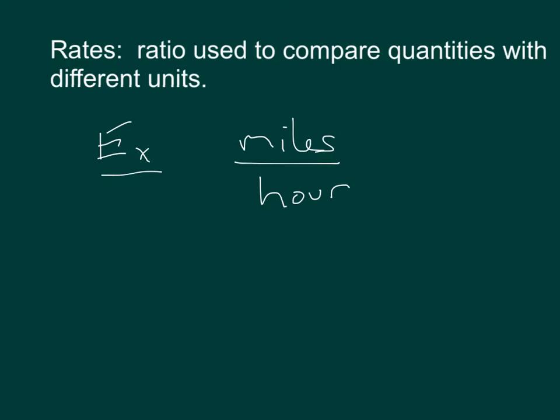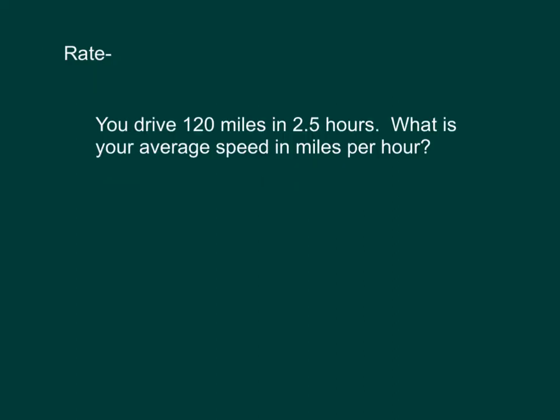Let's take a look at this problem. You drive 120 miles in 2.5 hours — what is your average speed in miles per hour? All we need to do is set this up as a ratio: we have 120 miles over the span of 2.5 hours.